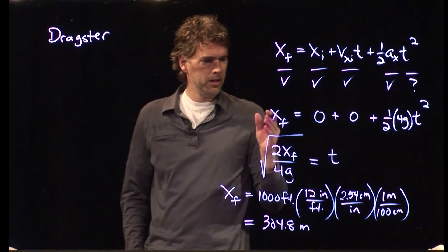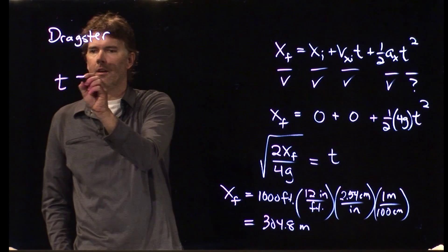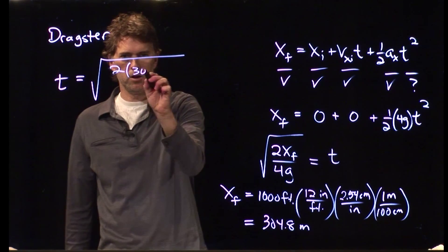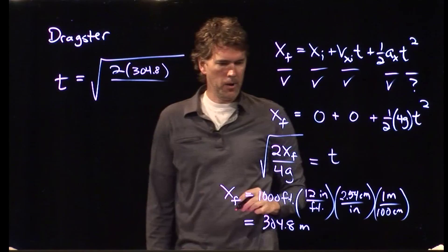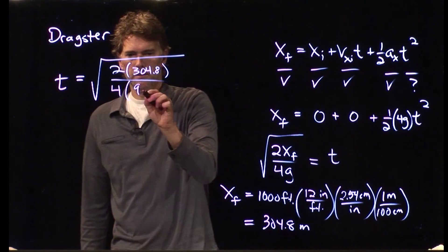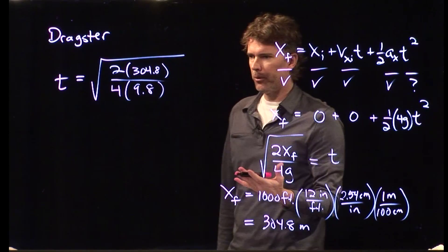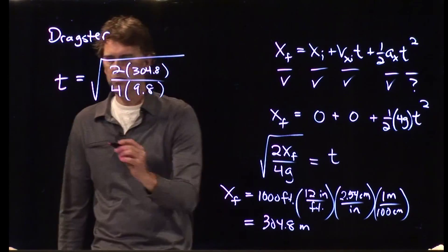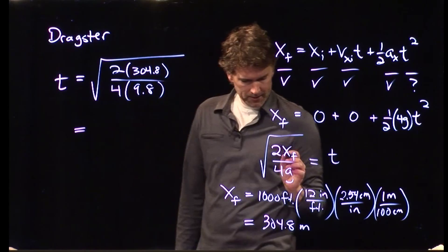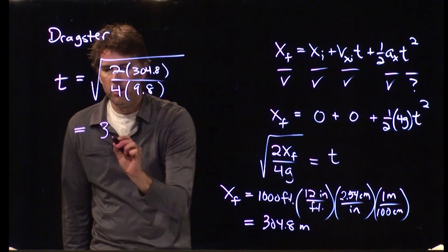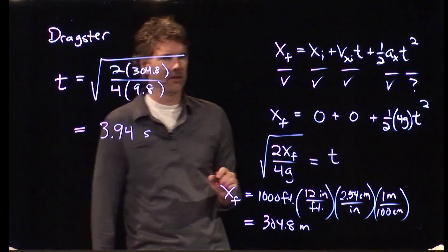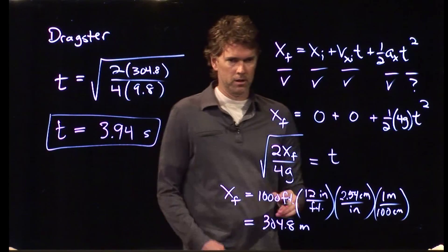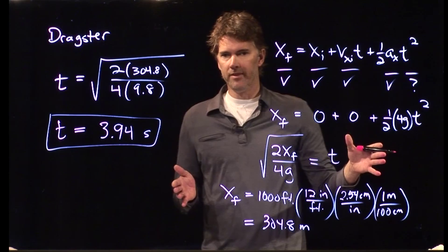So let's plug in and calculate what we get for t. There's our xf. Let's plug it into this equation and see what we get for t. t equals the square root of 2 times xf, 304.8 meters, and we're dividing by 4 times g, which is 9.8 meters per second squared. The meters are going to cancel out. Second squared ends up on top. Take the square root, it gets seconds. And if you plug this into your calculator and double-check me, you should get 3.94 seconds. And this is how long it takes a dragster to start from rest and travel 1,000 feet.